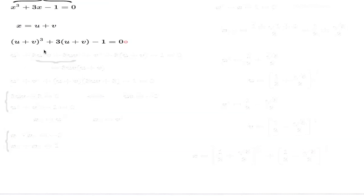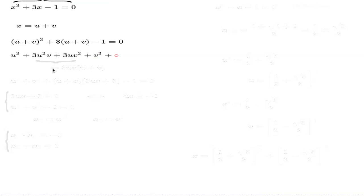What he does is substitute U plus V into the equation. So he says: let's take U plus V cubed — that corresponds to the first term — then 3 times U plus V, take 1, equals 0. The next step is to use the binomial expansion to expand this bracket, giving U cubed plus 3U squared V plus 3UV squared plus V cubed.